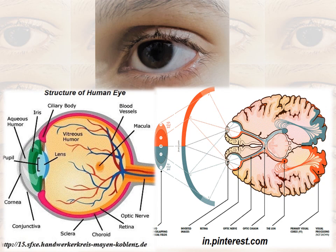Those neural impulses travel through the optic nerve to the occipital lobe of the brain, where the stimuli are received, organized, and interpreted — we understand what the object is. This whole process takes milliseconds, and we are lucky to have such an organ, through which we enjoy the beauty of nature and the beauty of different colors.